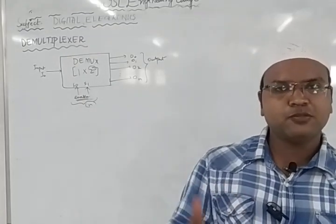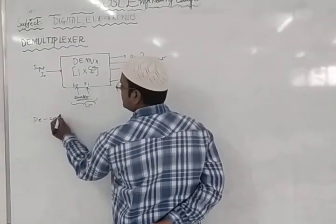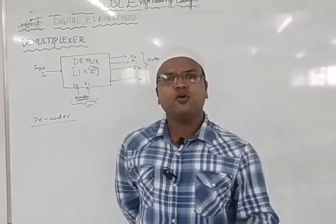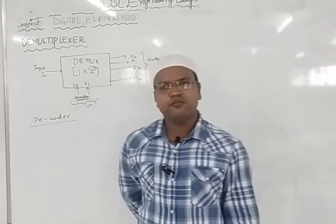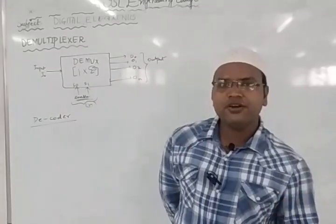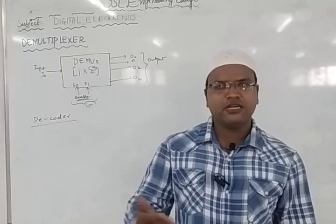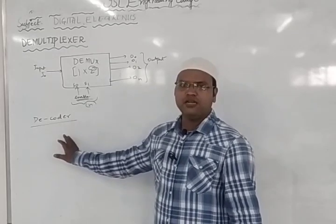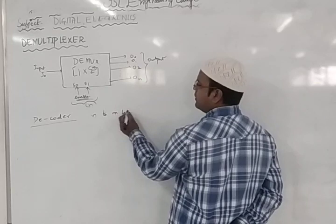The next topic is decoder. A decoder is also a combinational logic circuit in which you decode information. Decoding means making information secure — the information passed from sender can only be understood by the receiver. Encryption and decryption are done by specific devices in electronics, and a decoder is part of that process. A decoder converts N input lines into respective M output lines.